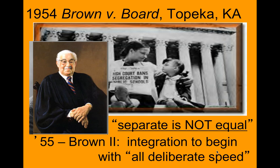The Supreme Court in 1954 said separate was not equal, and schools were to be desegregated. Then in 1955, Brown II was passed with the intention of making this happen at a deliberate speed, meaning that states have to abide by this federal law.